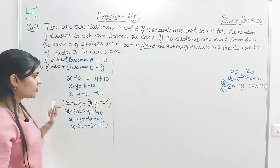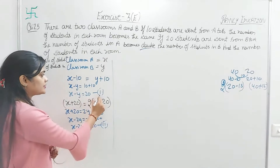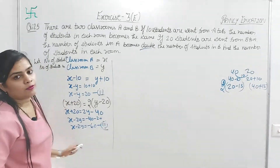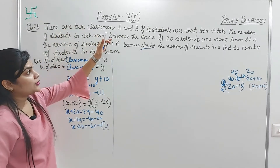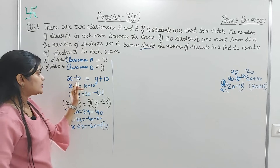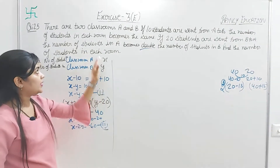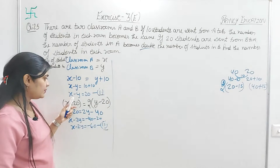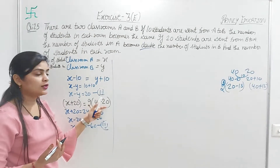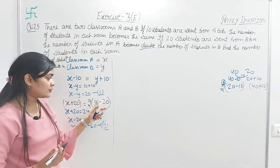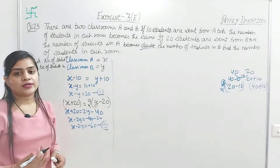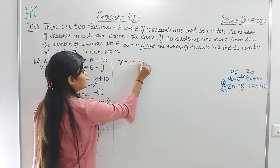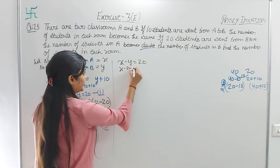The key focus here is forming these two equations correctly. Once you have the two equations, the question is easy to solve. The x variable has the same coefficient and the same sign in both equations, so we subtract. Subtracting equation 2 from equation 1, the x terms cancel, giving us plus y equals 80.